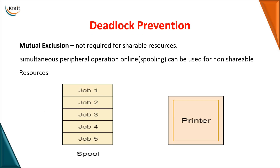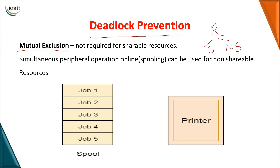Now, coming to deadlock prevention in detail, we will go through each necessary condition. The first necessary condition is mutual exclusion. A resource can be a shareable resource or a non-shareable resource. For shareable resources, mutual exclusion is not required because any number of processes can use the resource at the same time.